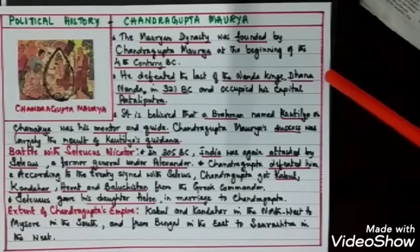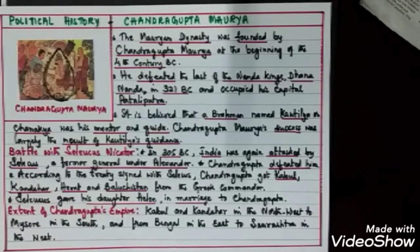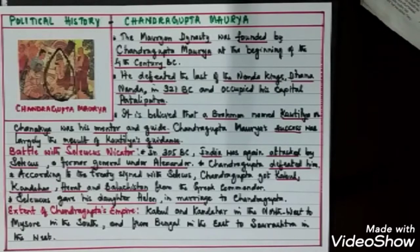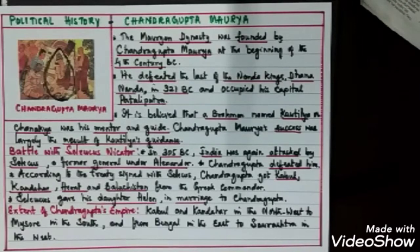In the beginning, there is a legend that Chandragupta Maurya was working under the Nandas but was dismissed from service. Chandragupta was helped by a Brahmin named Kautilya, popularly known as Chanakya, who became his mentor and guide. Chandragupta's success was largely the result of Kautilya's guidance. Kautilya had also been disgraced by the Nanda rulers, and both decided to put an end to Nanda rule. After Chandragupta occupied the crown, he faced a new enemy: Seleucus Nicator.